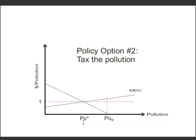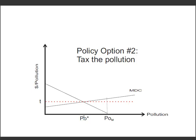The second policy option is to put a tax on pollution. In this case we've set the tax equal to T, and we've told the firms that for every unit of pollution that you create, you're going to have to pay this tax. You'll see that the marginal net benefits to the firm is not the whole distance from the marginal net benefit curve down to zero, but it stops at the tax because they have to pay it. So the marginal net benefit curve is now smaller, and you'll see that the marginal net benefit to the firm hits zero at PO*, which is our socially optimal level.